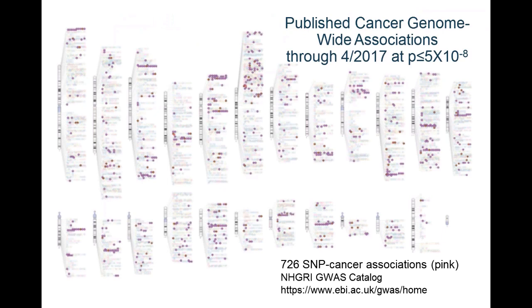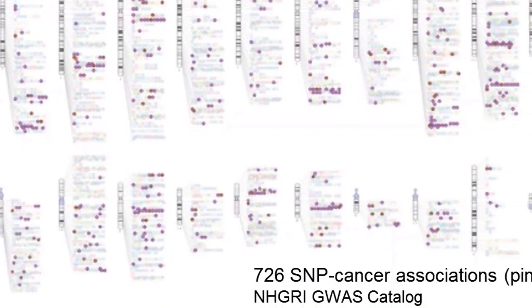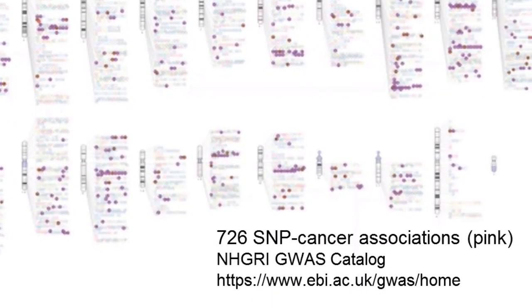Genome-wide association studies, or GWAS, have been very successful at identifying common genetic variants associated with disease. Shown on this slide are pictures of the chromosomes, and the little dots are the significant associations. In pink are the significant SNP-cancer associations from the GWAS catalog, and there were over 700 as of April 2017.